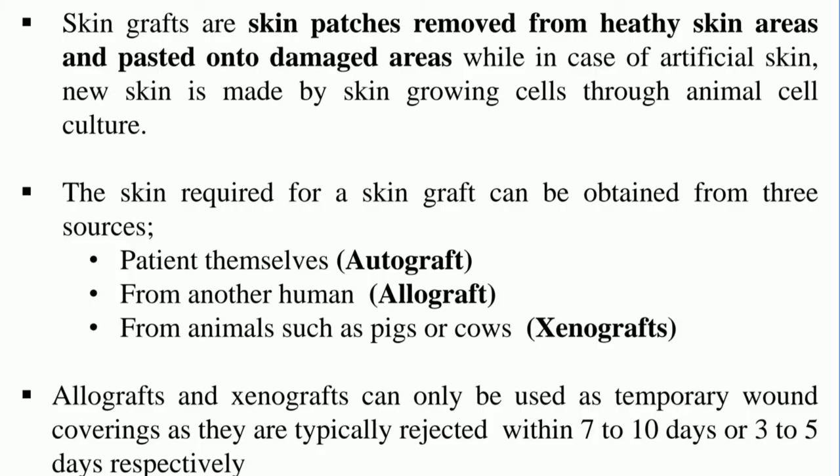Skin grafts are patches of skin removed from healthy areas and pasted onto the damaged area. With artificial skin, a completely new skin is prepared from skin-growing cells through the technique of animal cell culture. Artificial skin is a prime example of animal cell culture.